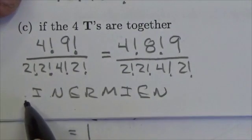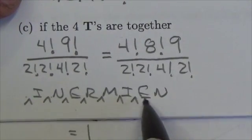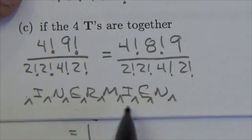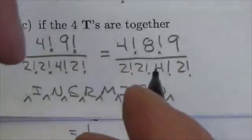Where the nine comes from is there are now nine different places in and around those letters where I could put that group of four T's.